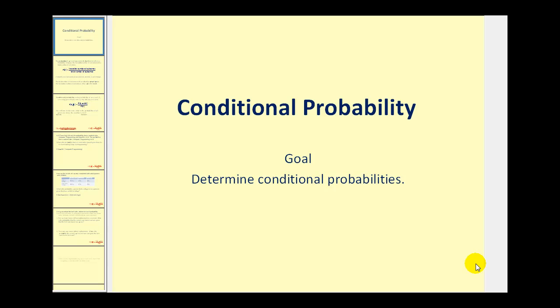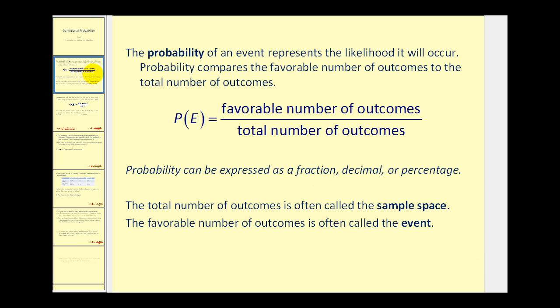Welcome to a lesson on conditional probability. Before we start, remember the probability of an event is equal to the favorable number of outcomes compared to the total number of outcomes, which can be expressed as a fraction, decimal, or percentage.